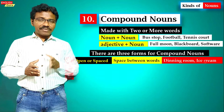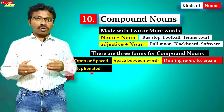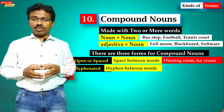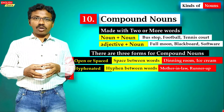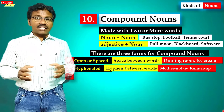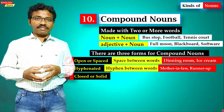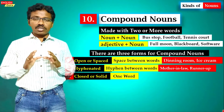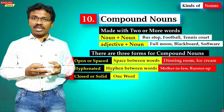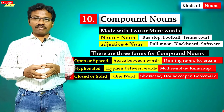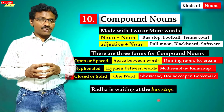Open compound nouns have a space between words, such as 'dining room' and 'ice cream.' Hyphenated compound nouns have a hyphen between words, such as 'mother-in-law.' Closed or solid compound nouns are written as one word with no space or hyphen, such as 'showcase,' 'bookmark,' and 'housekeeper.'